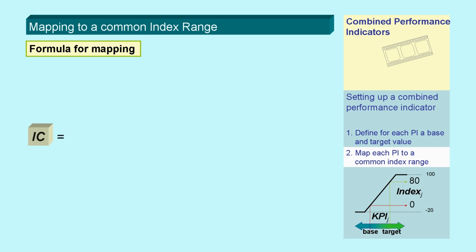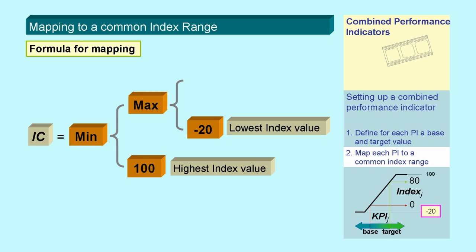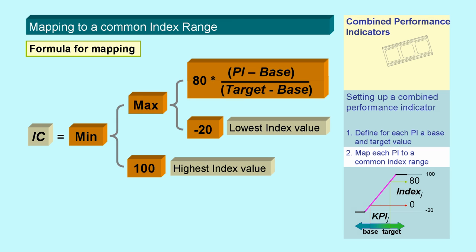The mapping can be done with a simple formula. We limit the upper limit to 100, the highest possible index value, and the lower value to minus 20, the lowest possible index value. In between, we use a linear function given by the actual value and the base and target value of each individual performance indicator.